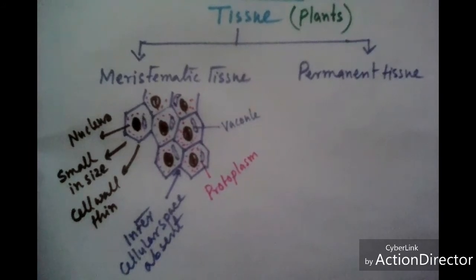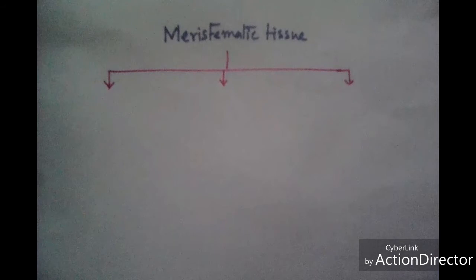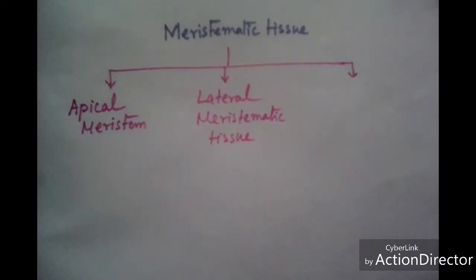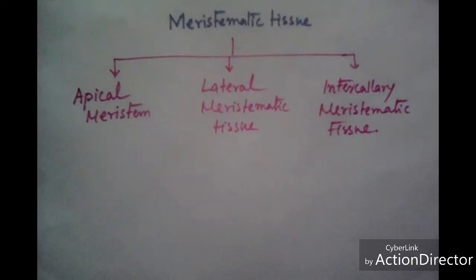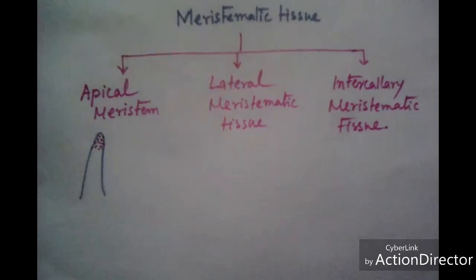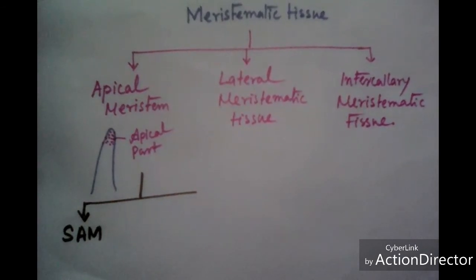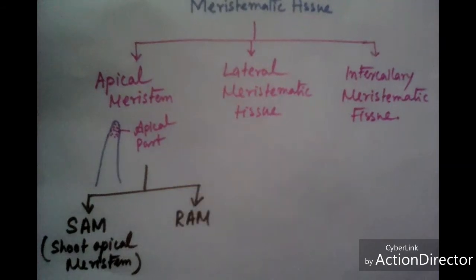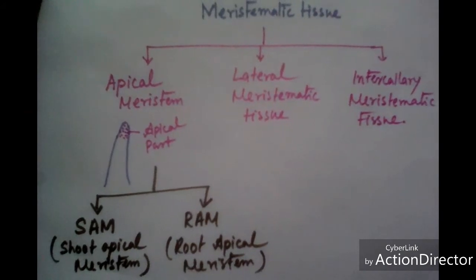The three types are: apical meristematic tissue, lateral meristematic tissue, and intercalary meristematic tissue. In apical meristematic tissue, meristematic cells are present at the apical part of the plant body. Apical meristem is divided into two types: SAM, which is shoot apical meristem, and RAM, which is root apical meristem.